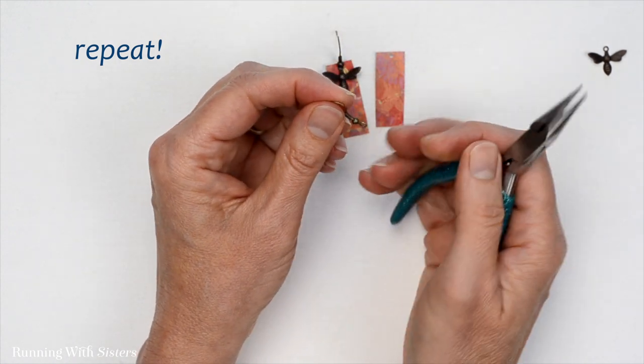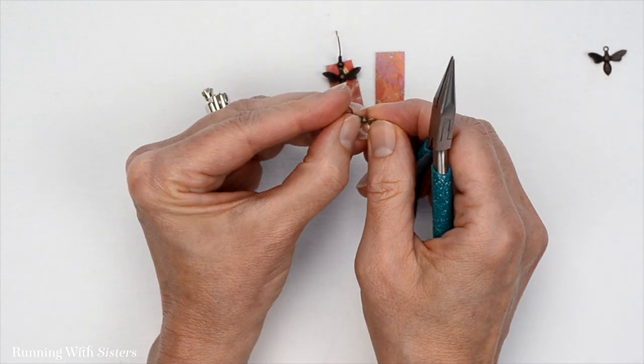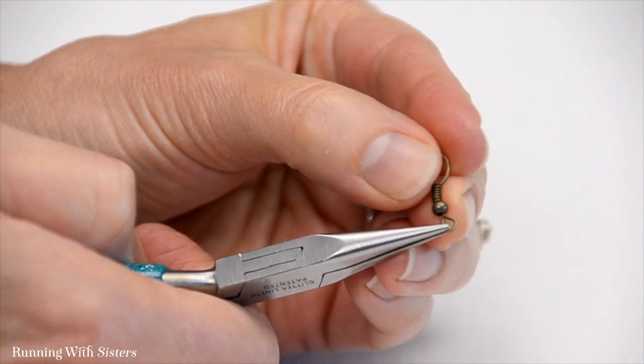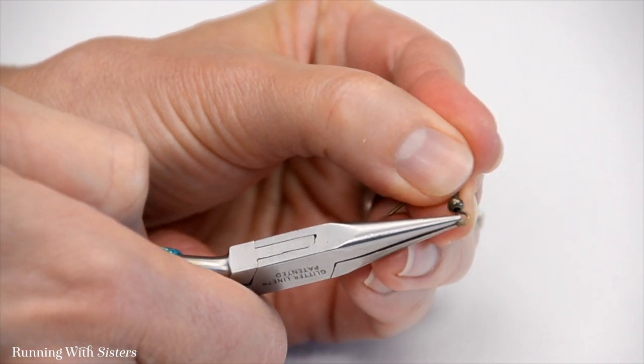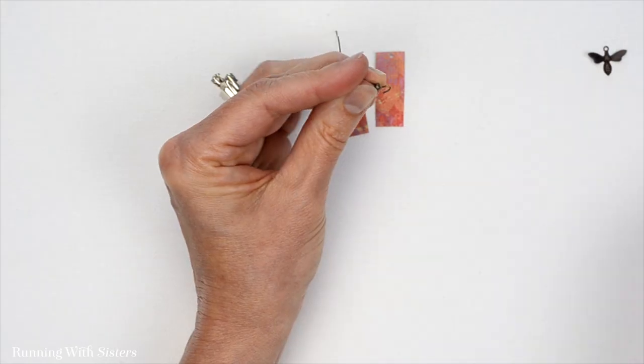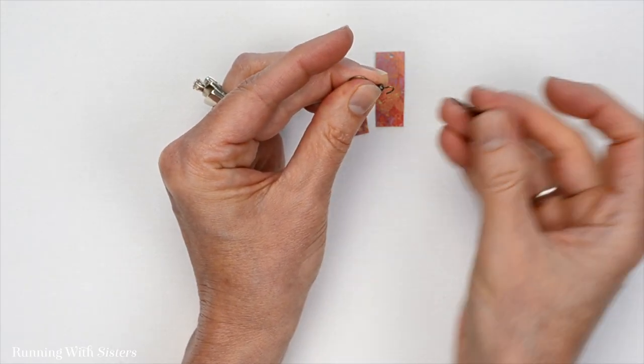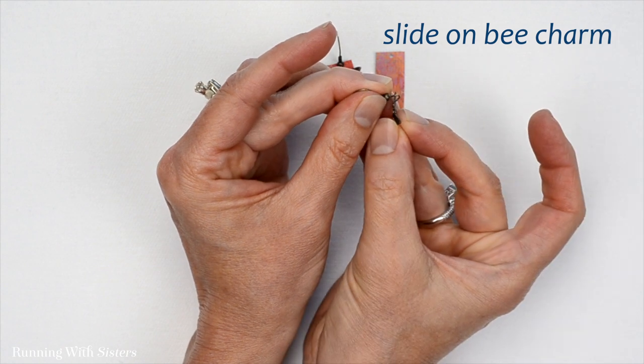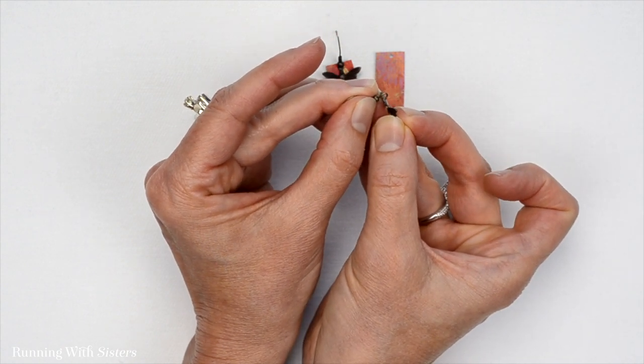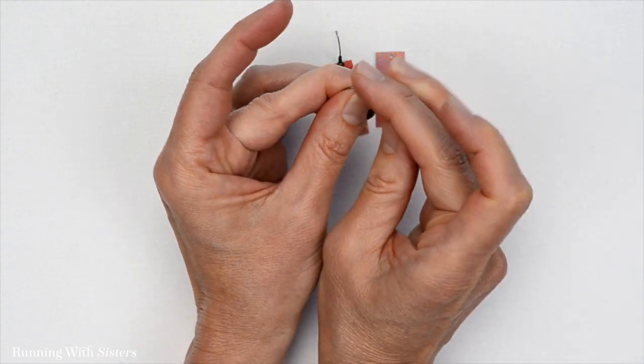Start with our earring wire. Here's my loop. I'm going to grab onto the side of the loop that's got the split in it, and I'm going to rotate it so that it opens. I'm going to take my bee charm and slide it on. I want to make sure it's facing forward so that it hangs right. And I'm going to put it out of the way.